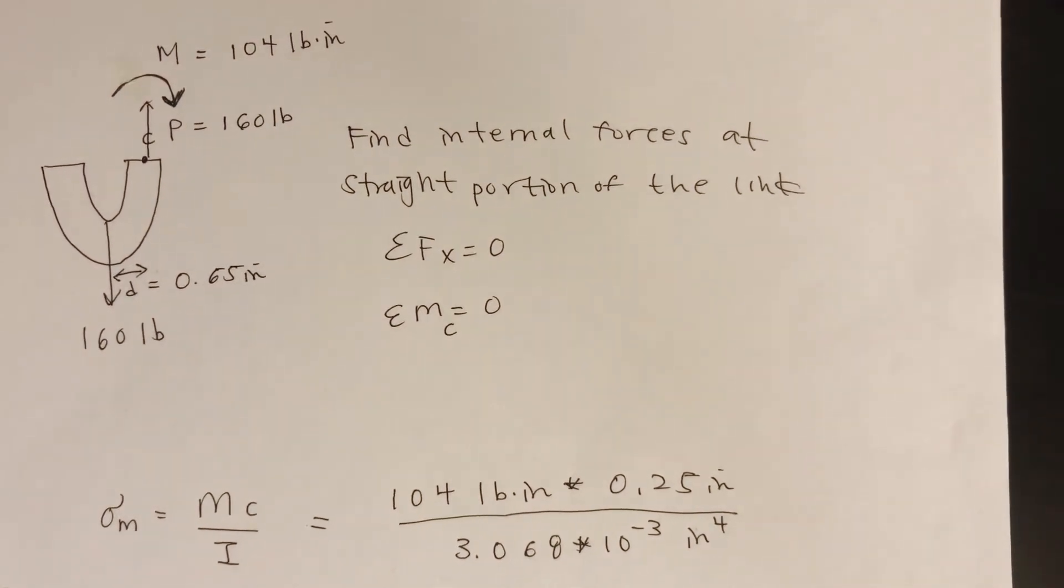Okay, so let's look at slide 10, example 4.07. An open link chain is obtained by bending low carbon steel rods into the shape shown. For a 160 pound load, determine the maximum tensile and compressive stresses in the straight portion of a link.